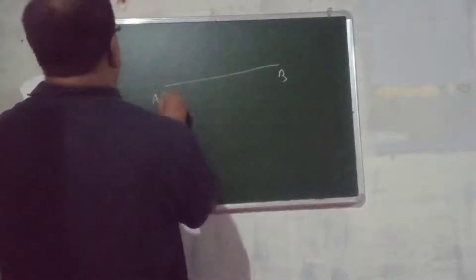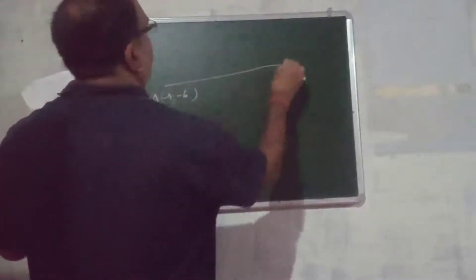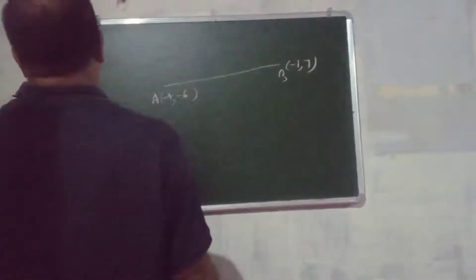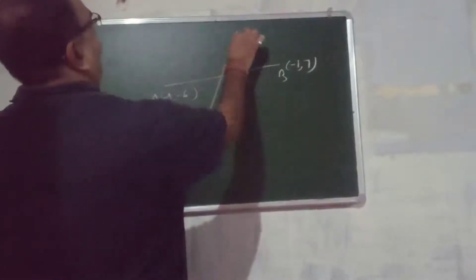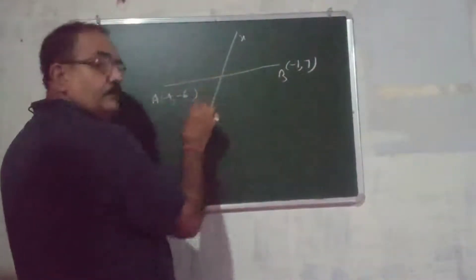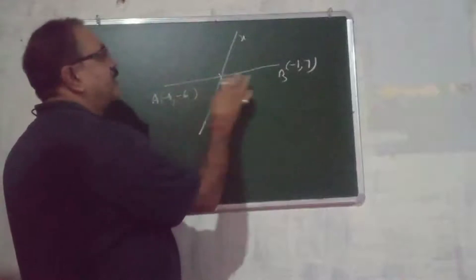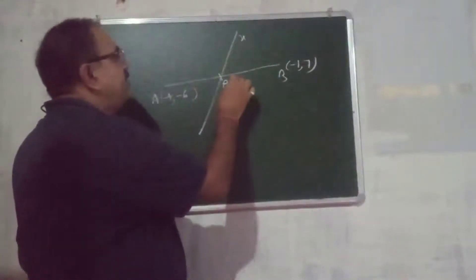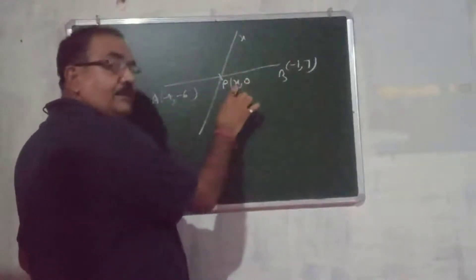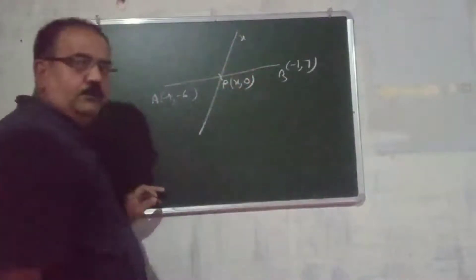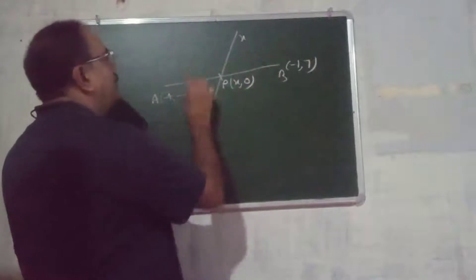Another question. Line AB is given. A is given as (-4, -6) and B is given as (-1, 7). The line AB is divided by the x-axis. We have to find the ratio and the coordinate of P. Since the x-axis intersects the line AB at P, and this is the x-axis, the x-coordinate will be some value x and the y-coordinate will be 0. Let P divide the line AB in the ratio K:1.